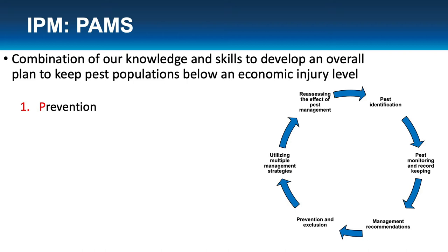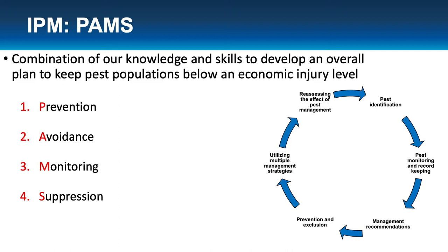So that is IPM. But what is PAMS? The PAMS technique is made up of four things: Number one is Prevention, number two is Avoidance, number three is Monitoring, and number four is Suppression. Prevention is your first line of defense and falls into the prevention and exclusion part of your overall IPM program. Avoidance is your second line of defense and falls into utilizing multiple management strategies. Suppression is when your prevention and avoidance techniques have failed — it's your last resort.